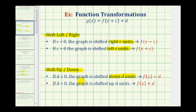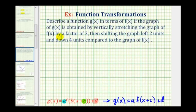If d is positive, the graph is shifted up d units, so we'd have f of x plus d. Going back to our example: because it's stretched vertically by a factor of three, a is equal to three. Because our graph is shifted left two units, c is going to be positive two. And because it's shifted down four units, d is going to be negative four.